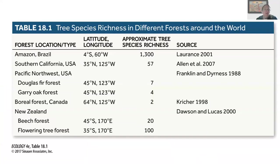Here's a table from the book showing different forest types across the world at different latitudes — their latitude, longitude, and approximate tree species richness. Forests in the Amazon have orders of magnitude more species than forests in Southern California, the Pacific Northwest, Canada, or New Zealand. But as you approach the tropics in either direction, species richness increases — a question we'll come back to in this lecture.